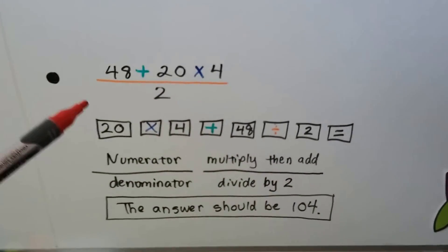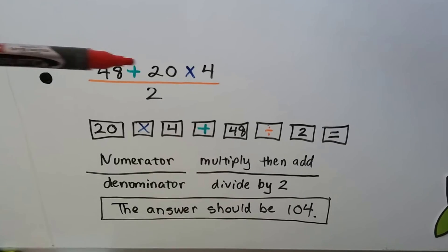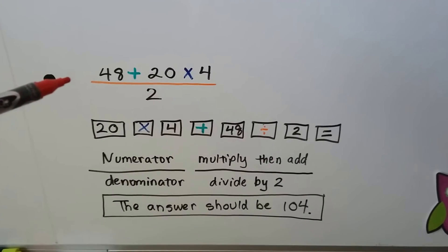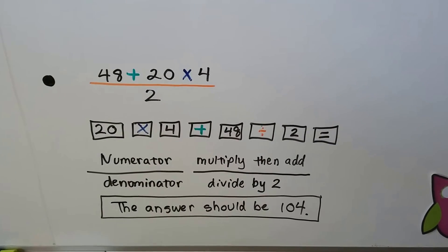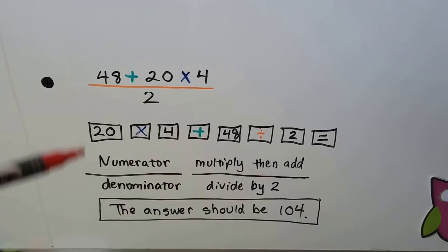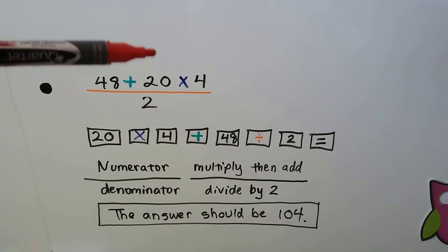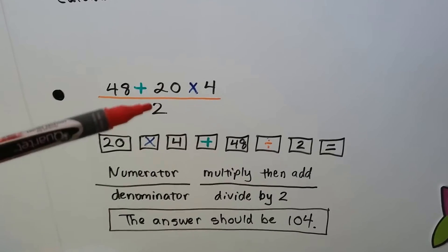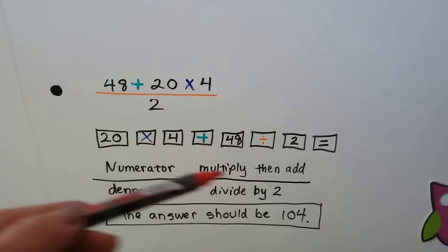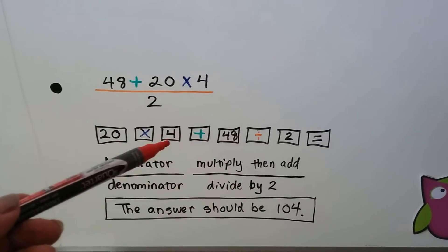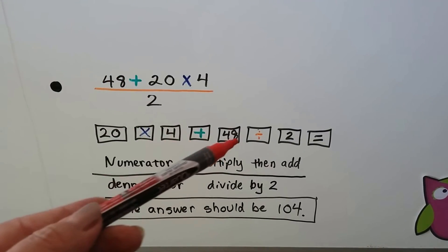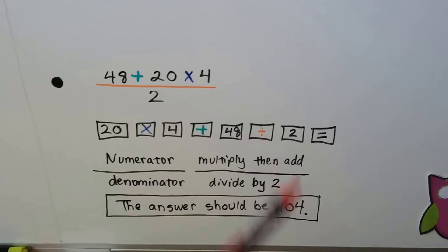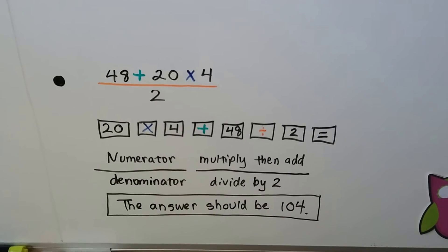Let's check out this one. If we have 48 plus 20 times 4 as a numerator and a 2 as a denominator, we know from the last video that this fraction bar, it means division because all fractions are really just little division problems. Well, what we're going to do is we're going to do the numerator first. So even though you're supposed to multiply and then divide, that's going from left to right. In this case, we're going to do everything in the numerator. We're going to multiply and then add. We're going to go 20 times 4 plus 48. Then we're going to do this fraction bar divided by 2. Your answer should be 104.